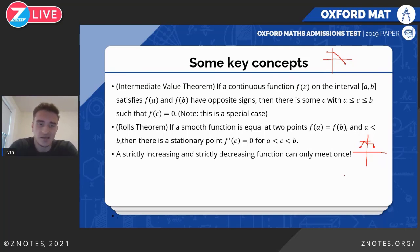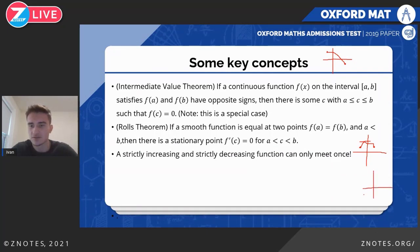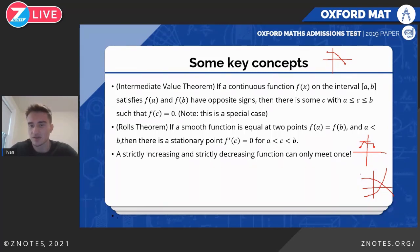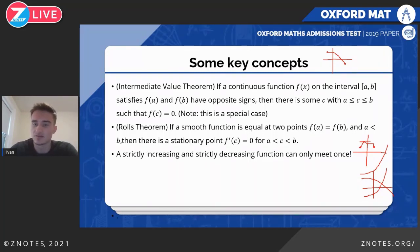Another key concept: if you have a strictly increasing function and a strictly decreasing function, they can only meet once. Once they meet, one goes down and the other goes up, so they will not meet again. They might not meet at all if one is shifted far enough, but if they do meet, it can only be once.